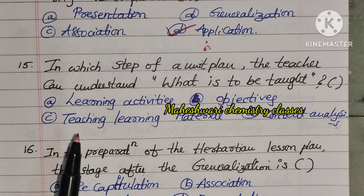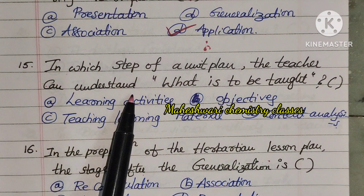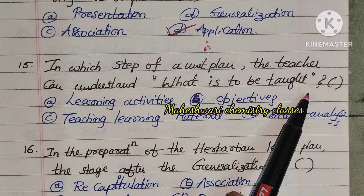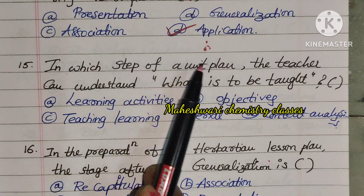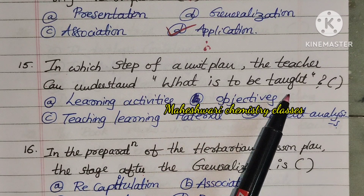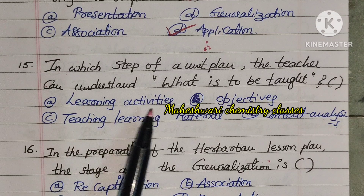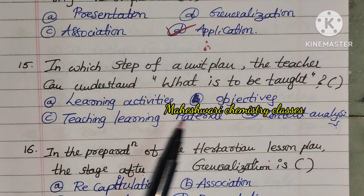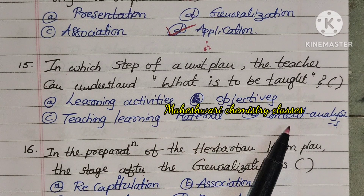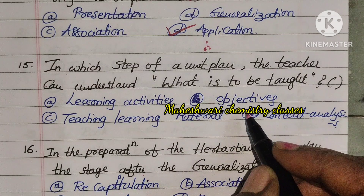Fifteenth question: In which step of a unit plan can the teacher understand what is to be taught? The teacher decides what to do based on the vision. Options are: Learning activities, Objectives, Teaching learning materials, Content analysis. The subject is content-based, so Option D is right.